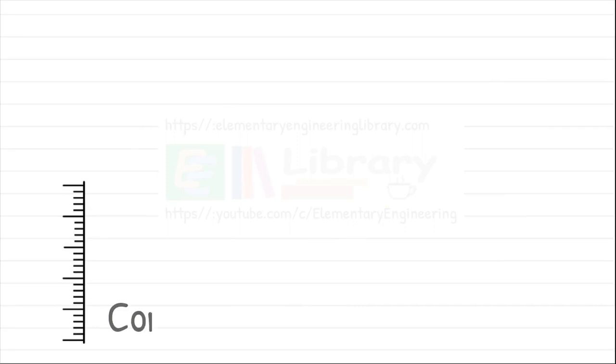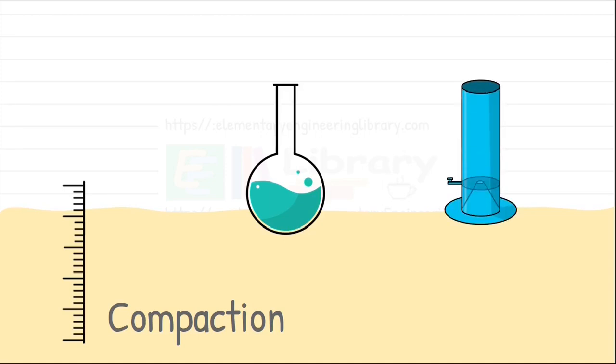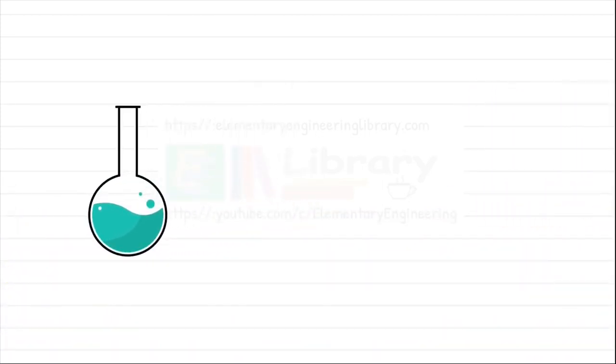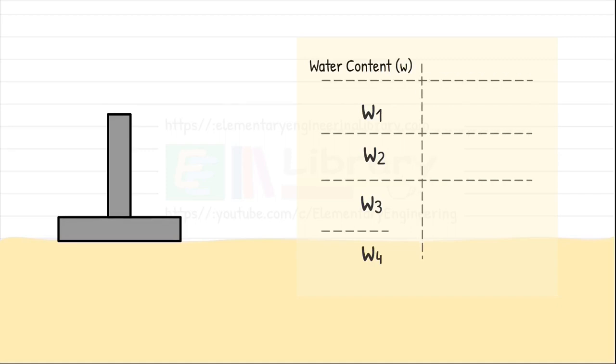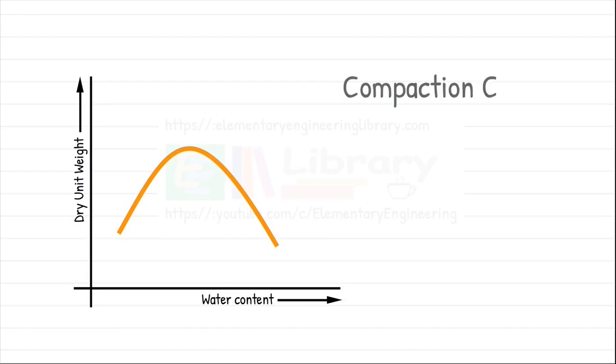To assess the level of compaction in any soil we perform laboratory and field tests. One such laboratory test we recently discussed in our previous video is standard proctor test. In such test soil is compacted with different amounts of water contents and respective dry densities obtained are recorded. The obtained data is plotted in a curve that is known as compaction curve.